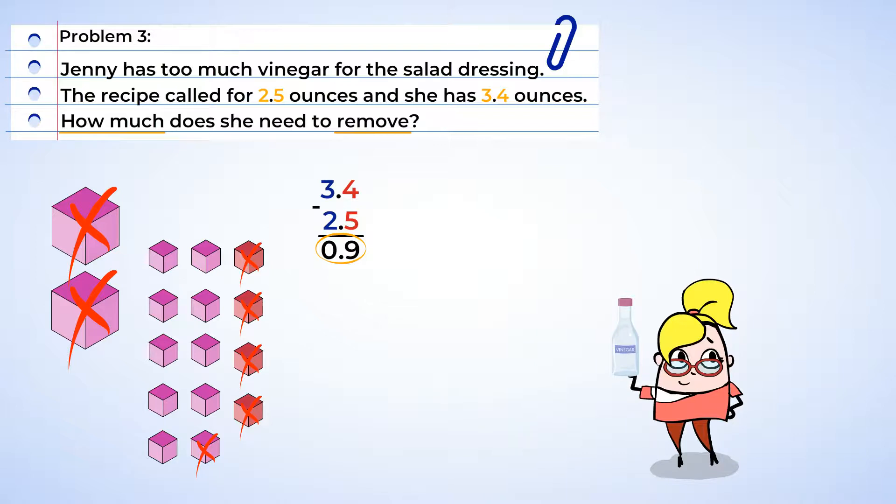Well, we check our whole number subtraction problems with addition. And it's the same with decimals. So, let's get to adding! Alright, the amount we found, we need to subtract, plus the amount written in the recipe, and that should give us the whole amount that Jenny poured for the dressing.